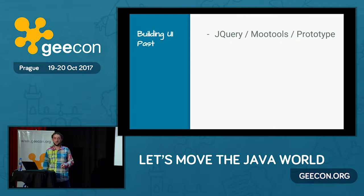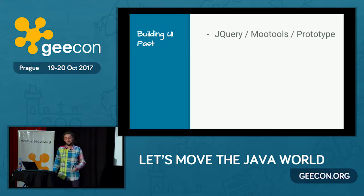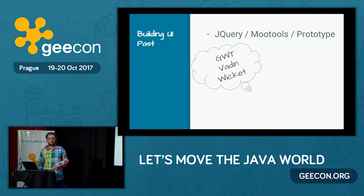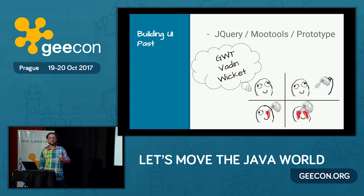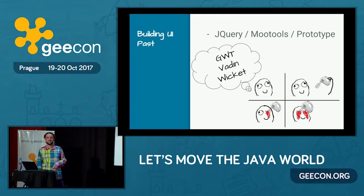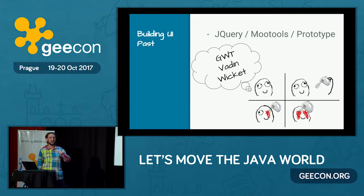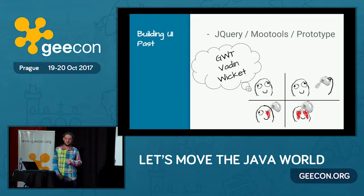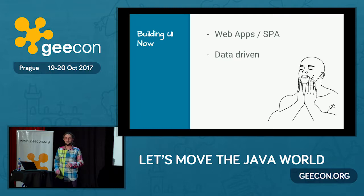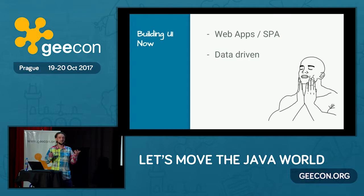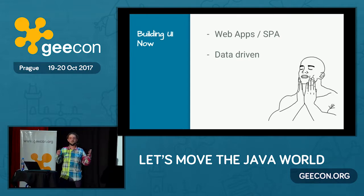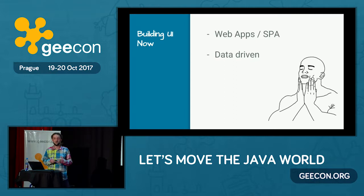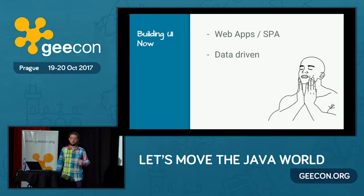Probably most of you used jQuery. Then some smart people invented tools like Google App Toolkit, Vaadin, and Wicket. This felt like I don't want to live on this planet anymore when I saw that. But fortunately, nowadays I feel so refreshed because we're building apps with a single-page application model, which is basically heavy data-driven and really feels like a native app, not like a web app anymore.